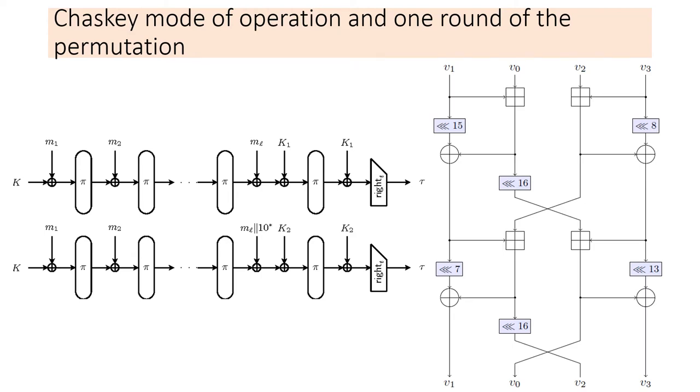Here are presented the mode of operation of Chaskey and one round of its permutation. You can see that the key is introduced only in the beginning and in the end of the algorithm, which is the even-mansour structure. After each block of plaintext is added to the state, the permutation is applied. At the end, depending whether the last block is full or not, different key, K1 or K2 derived from the initial one is added. The permutation of Chaskey is shown at the right and consists only of XOR rotation and modular addition operations.